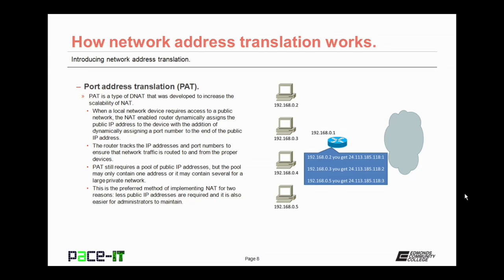PAT still requires a pool of public IP addresses, but the pool may only contain one public IP address, or it may contain several for a large private network. This is the preferred method of implementing network address translation for two reasons. First off, there are fewer public IP addresses required, and it makes it easier for an administrator to maintain.